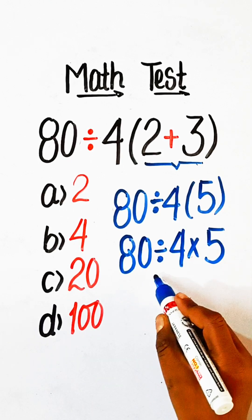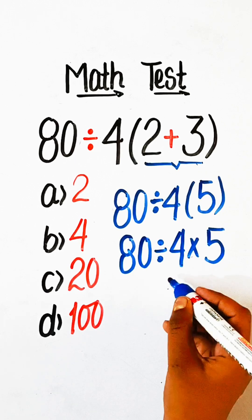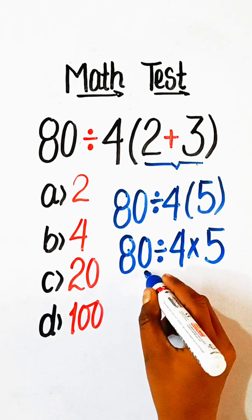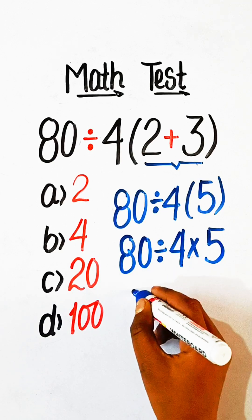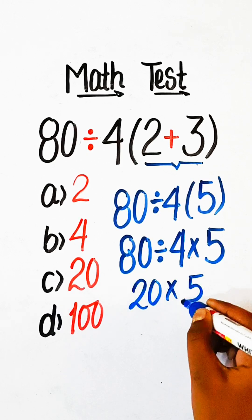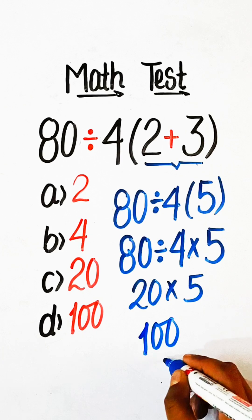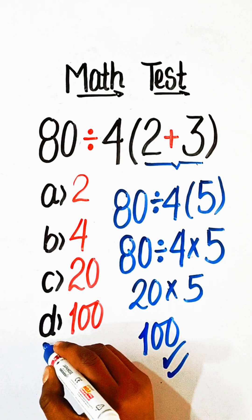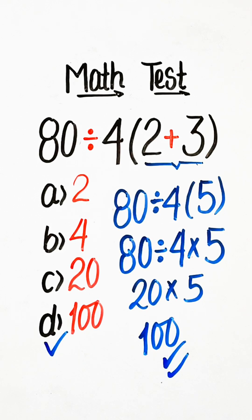We have here division and multiplication, so we will do the operation from left to right. 80 divided by 4 is 20, multiply by 5 is 100. So Option D, 100, will be our correct answer.